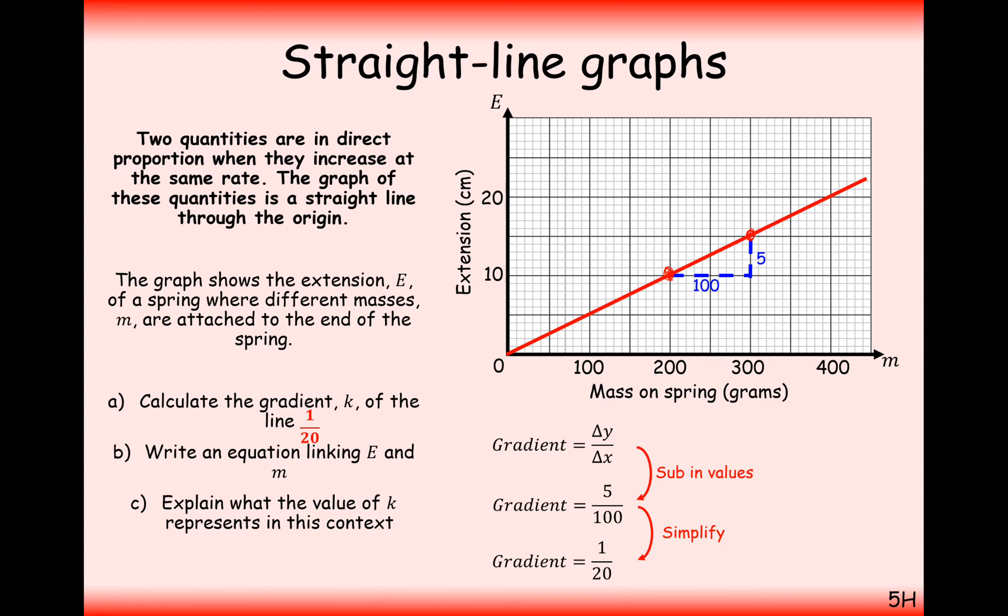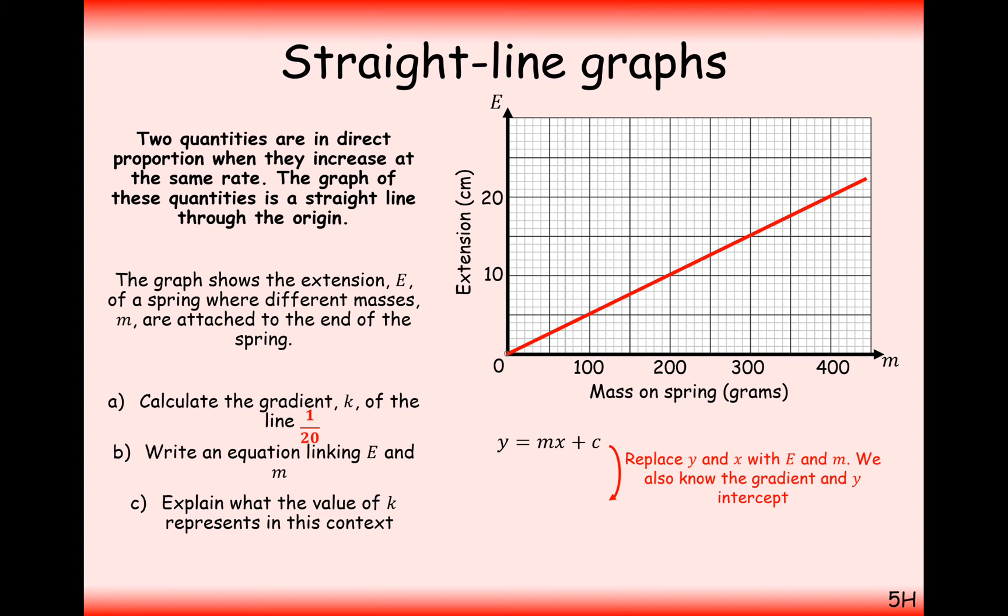The gradient of the line for the answer for part A is 1 out of 20. Part B, write an equation of E linking M together. Well, in y equals mx plus c, I now know my gradient, but I also know that it crosses through the point 0, 0, because in the bottom left here, we have the coordinate 0, 0.